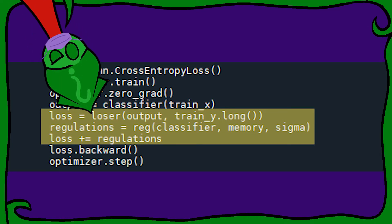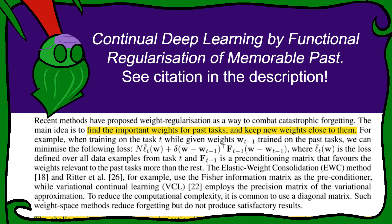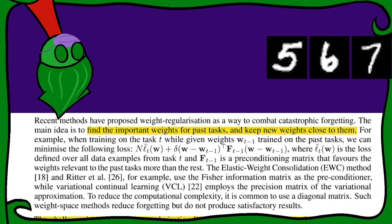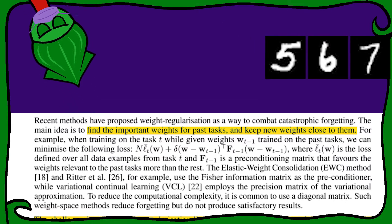What do we regularize? One option, the model's weights, which turn input into output. When we train our classifier on the digits 5 through 9, we could tell it, hey, don't change your weights too much, because your weights already work on 0 through 4. But this isn't the best option.